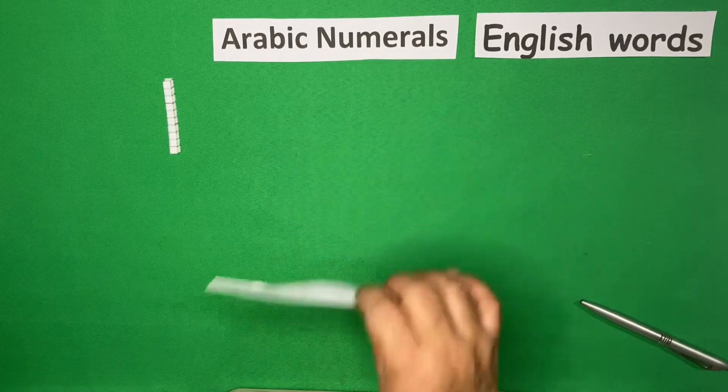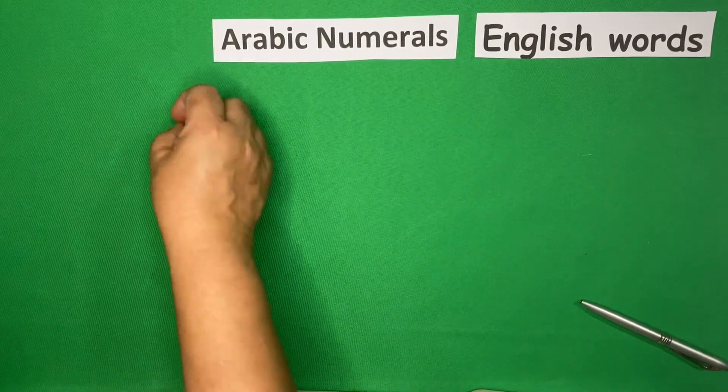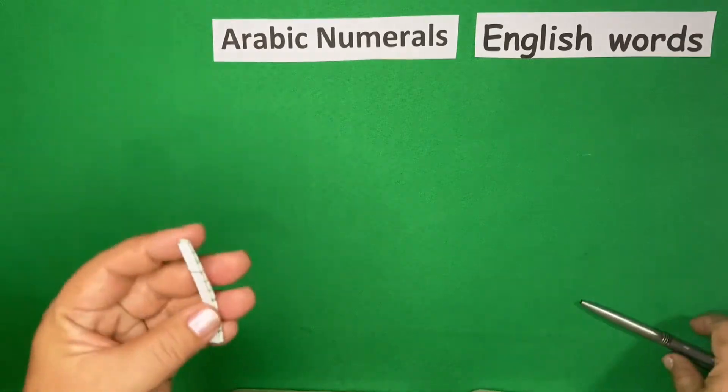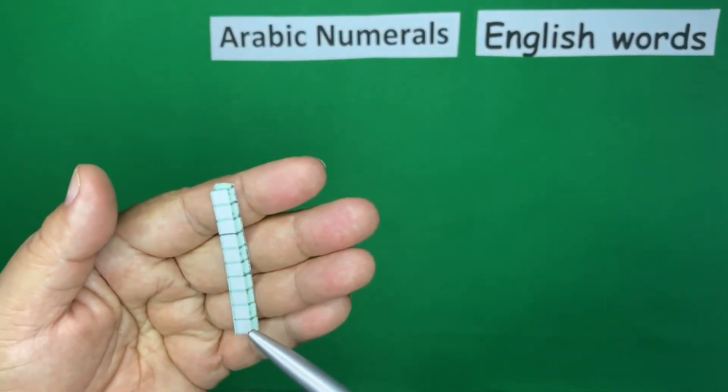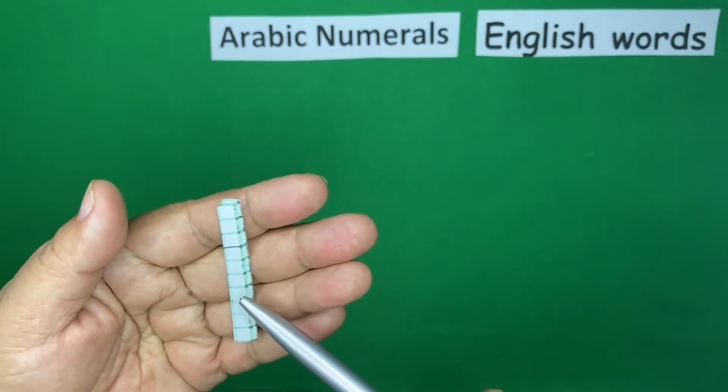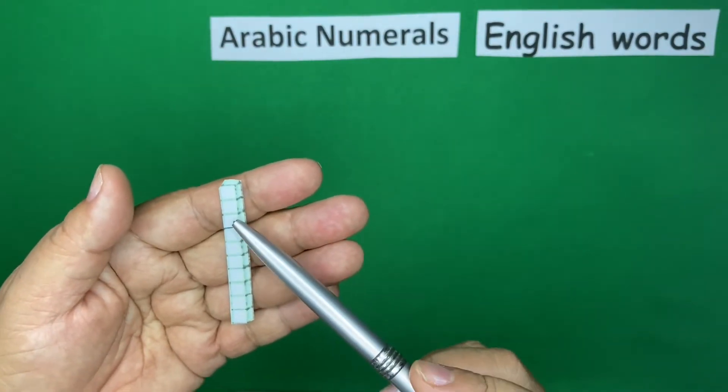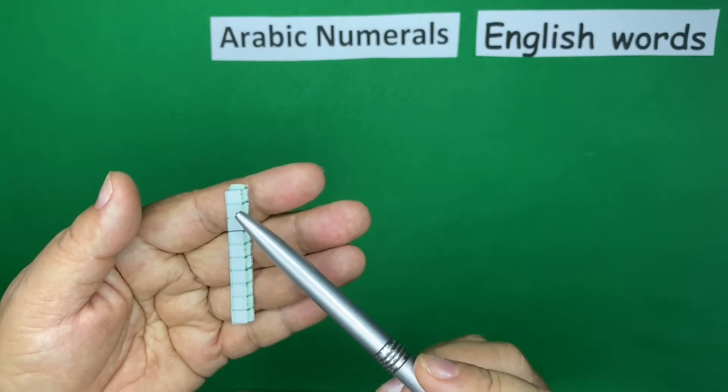First, let us have these blocks. Let us count them. 1, 2, 3, 4, 5, 6, 7, 8, 9, 10.